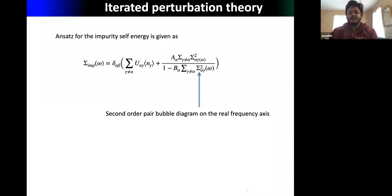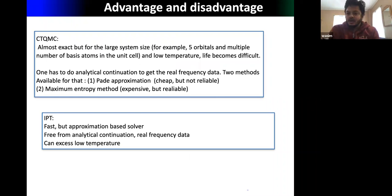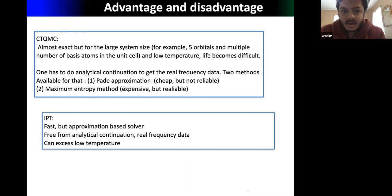Other solvers like Iterated Perturbation Theory (IPT) are based on perturbation theory — for example, truncating at second order using the Feynman-Dyson expansion. The sigma impurity is approximated by the second-order Fock bubble diagram on the real frequency axis.